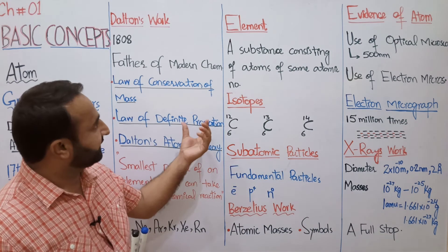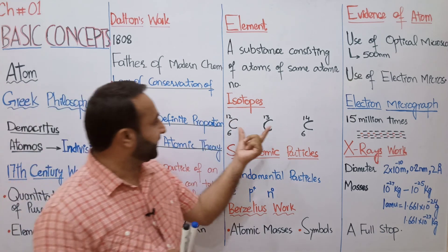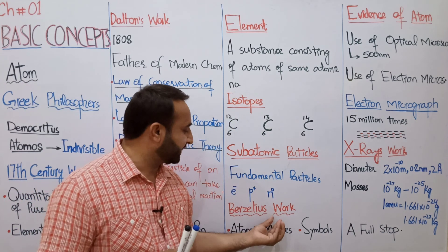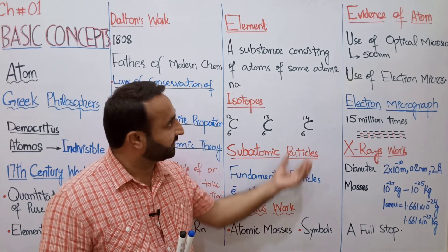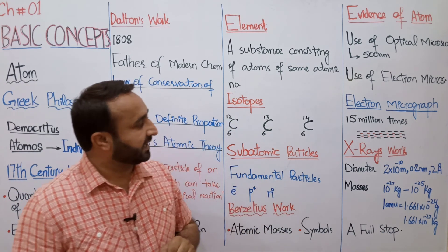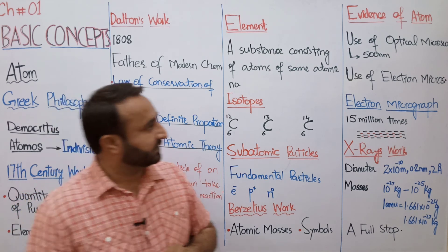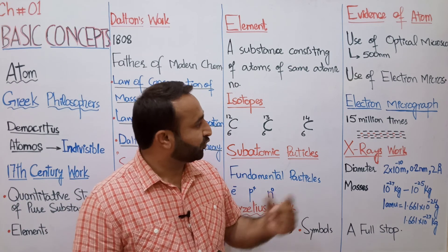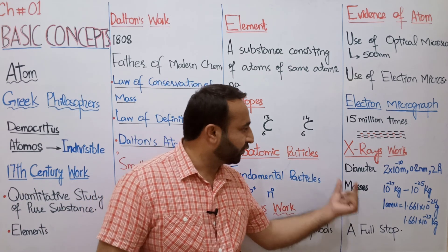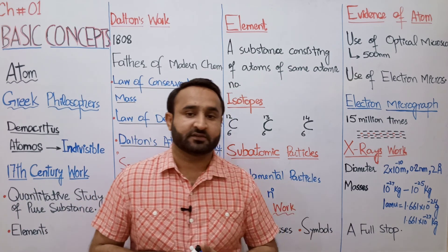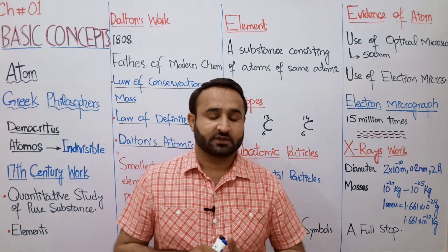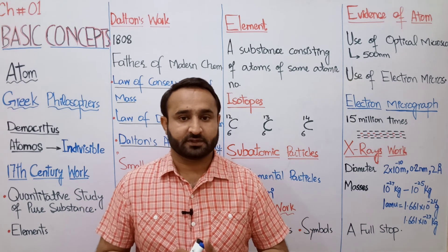ہم نے elements، isotopes، sub-atomic particles، Berzelius کا work، اور last میں evidences of atoms دیکھے — جن میں optical microscope، electron microscope، اور X-rays کا work شامل ہے۔ This is all about this topic. Thank you very much.